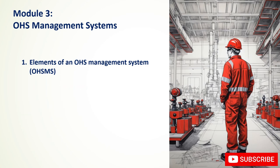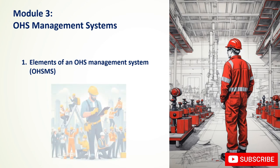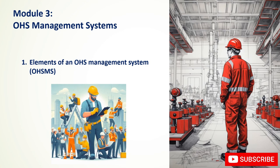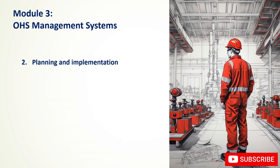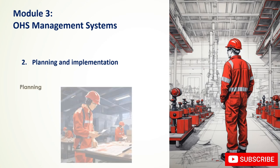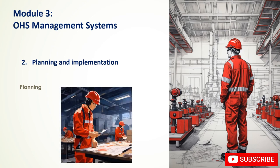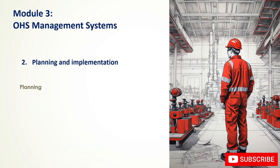By implementing these elements, organizations can establish a robust OHSMS that effectively manages risks and promotes a safe and healthy workplace. The planning phase involves translating the OHS policy into actionable steps, with hazard identification and risk assessment as the foundation — systematically identifying potential hazards and evaluating the associated risks.